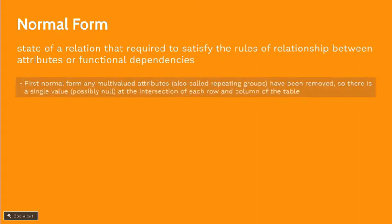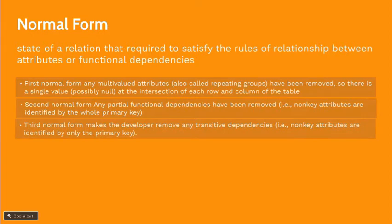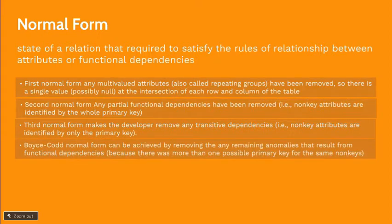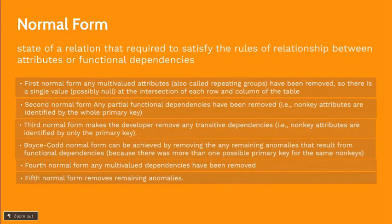In the First Normal Form, any multi-valued attribute has been removed, so there is a single value at the intersection of each row and column of the table. The Second Normal Form removes any partial functional dependencies. The Third Normal Form removes any transitive dependencies. Boyce-Codd Normal Form removes remaining anomalies resulting from functional dependencies. In the Fourth Normal Form, any multi-valued dependencies have been removed. And the Fifth Normal Form removes remaining anomalies.